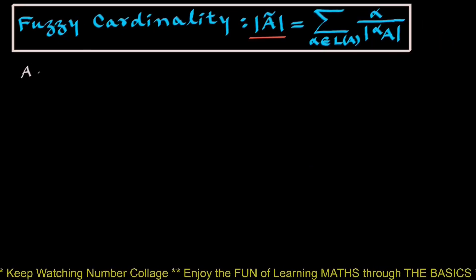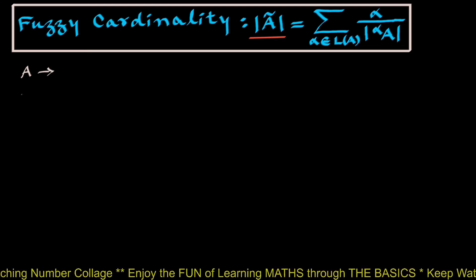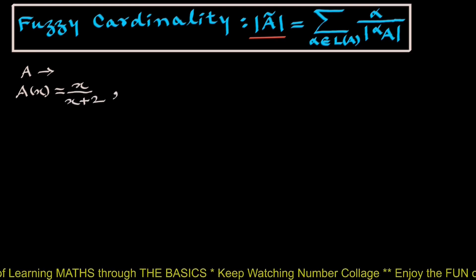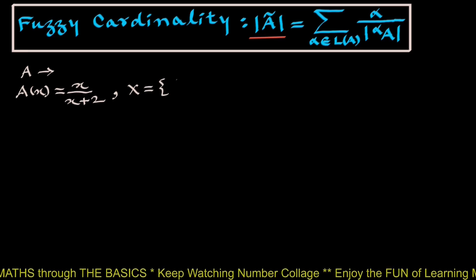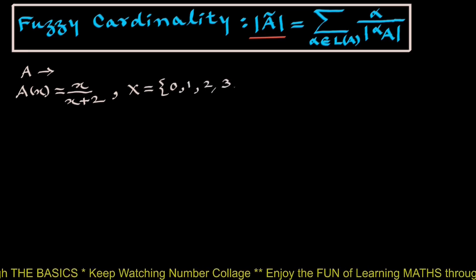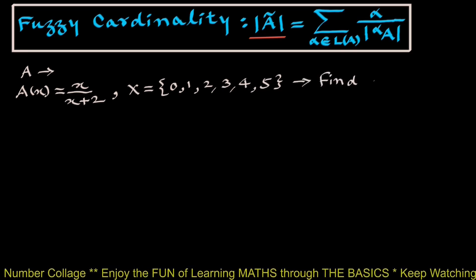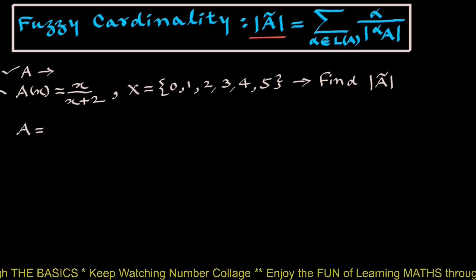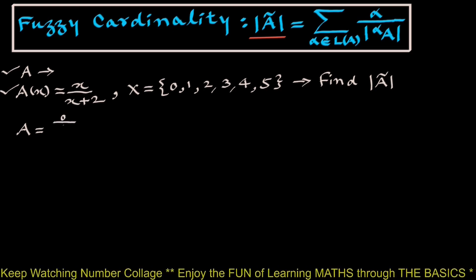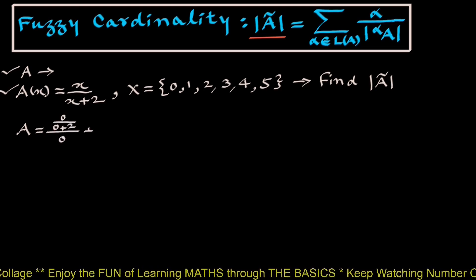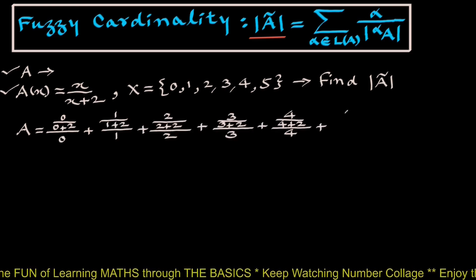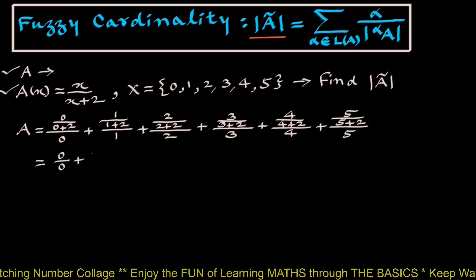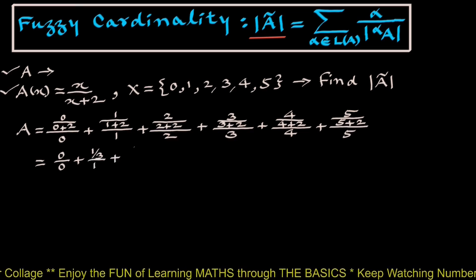Fuzzy set A is defined where the grade value A(x) = x/(x+2), with universal set X = {0, 1, 2, 3, 4, 5}. If we have to find fuzzy cardinality of this fuzzy set A, we write it according to these grade values: 0/0 + 1/3 upon 1 + 2/4 upon 2 + ... + 5/7 upon 5, which simplifies accordingly.